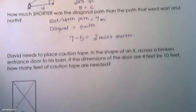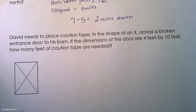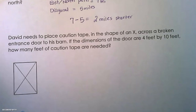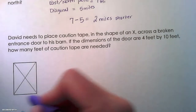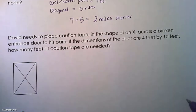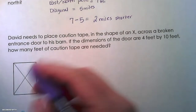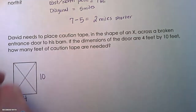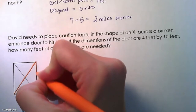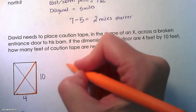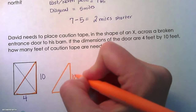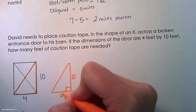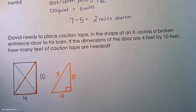Our next question: David needs to place caution tape in the shape of an X across a broken entrance door to his barn. If the dimensions of the door are four feet by ten feet, how many feet of caution tape are needed? This is our barn door and this is going to be the caution tape across it. The dimensions are four by ten — one piece of caution tape drawn from corner to corner gives us a right triangle. The height is ten and the width is four, and we are trying to find the length of the hypotenuse.